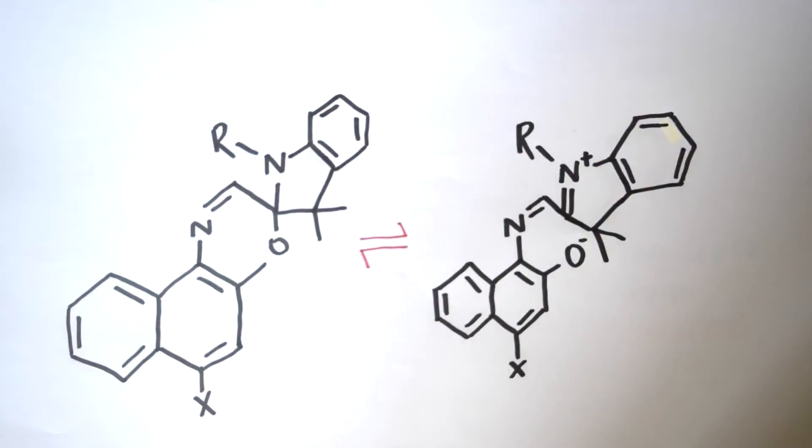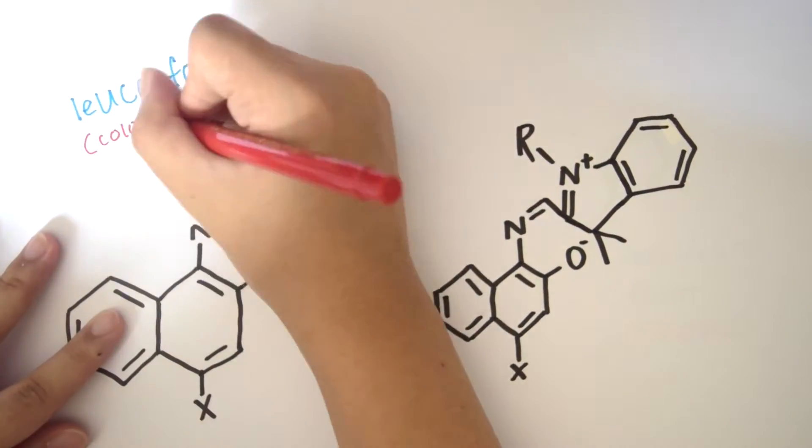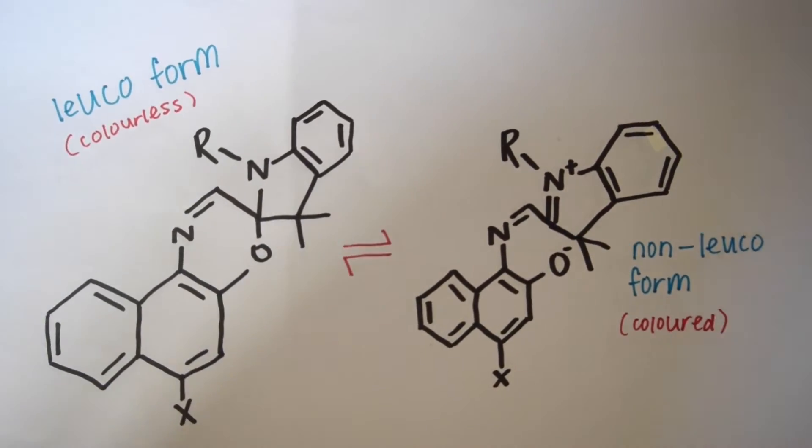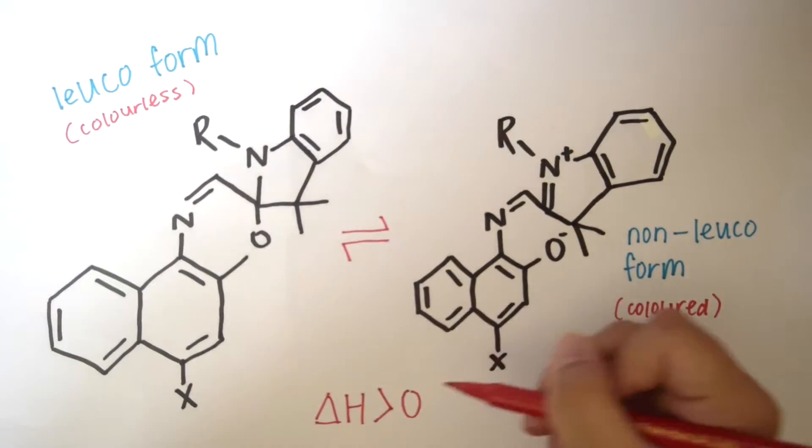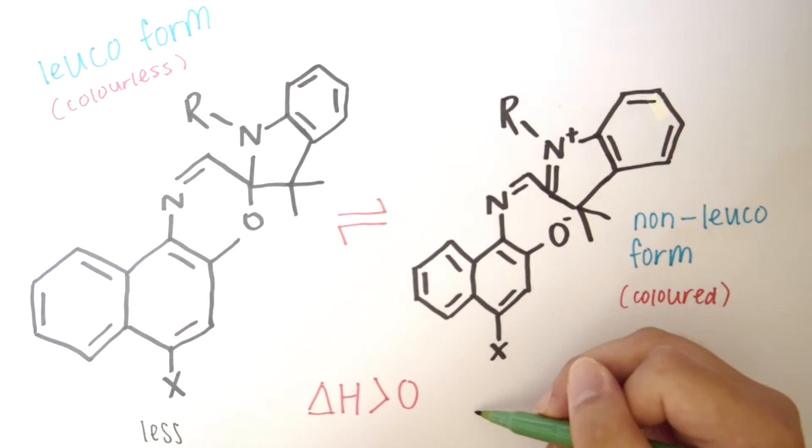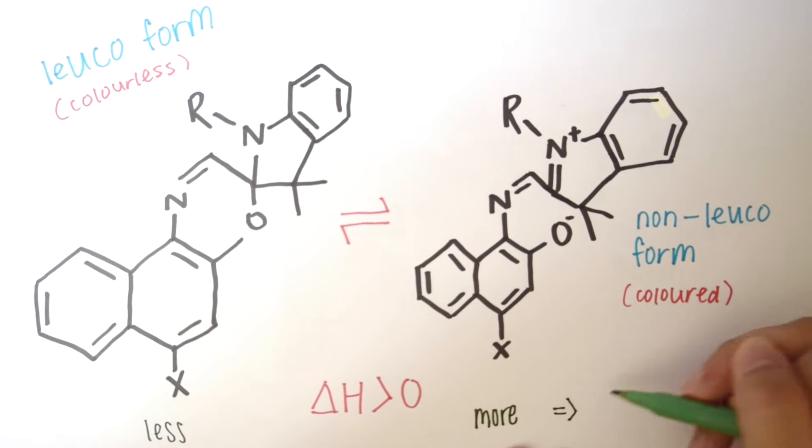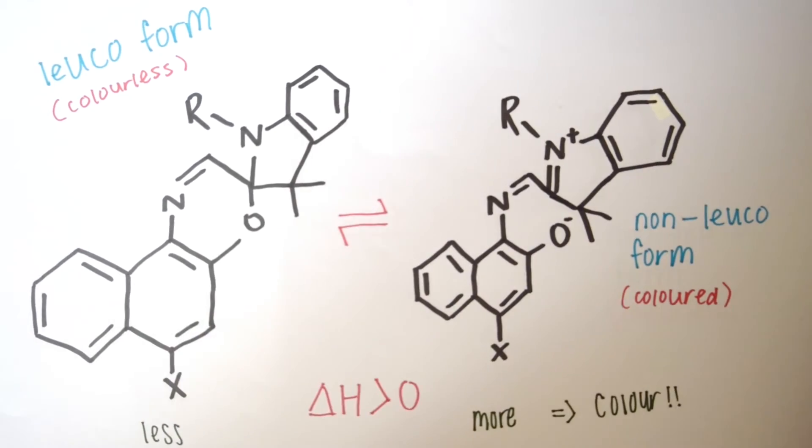They shift back and forth within two subtly different structures, also referred to as resonance. One of them is leuco, a colourless form, and the other is non-leuco, the coloured form. They absorb and reflect light differently. In simple terms, we say that this reaction is endothermic, so when heat is added to it, the forward reaction that takes up this heat is favoured more. Thus, more reactants are converted to products shifting the position of equilibrium and producing a new colour.